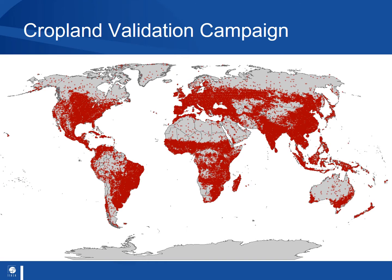The objective of our latest campaign called cropland validation is to collect data on whether there is cropland or not at around 40,000 locations around the world. This global data set will help us to better map the spatial extent of cropland worldwide so that we can predict the environmental impacts of intensifying and expanding agriculture in the future.